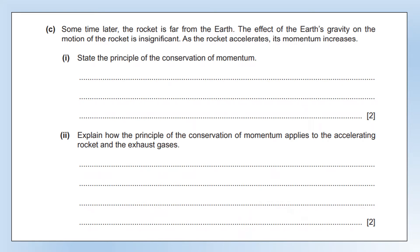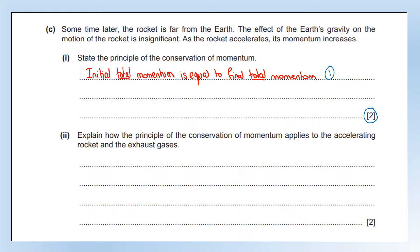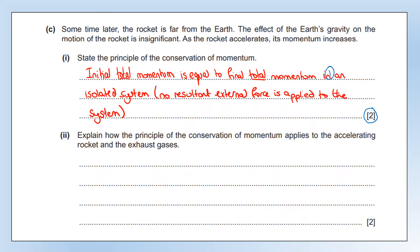Some time later, the rocket is far from Earth and the effects of Earth's gravity on the motion of the rocket are insignificant. As the rocket accelerates, its momentum increases. State the principle of conservation of momentum. There are two parts to this, hence the two marks available. First: initial total momentum is equal to final total momentum — total momentum stays the same. That gets you one mark. The second part is saying when you're allowed to apply it: in an isolated system, or where no resultant external force is applied. That's why we needed the information that Earth's gravity is insignificant — there's no longer a force acting on the rocket, so now we can apply conservation of momentum.